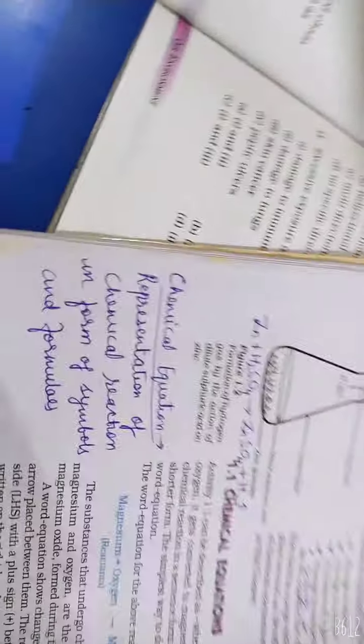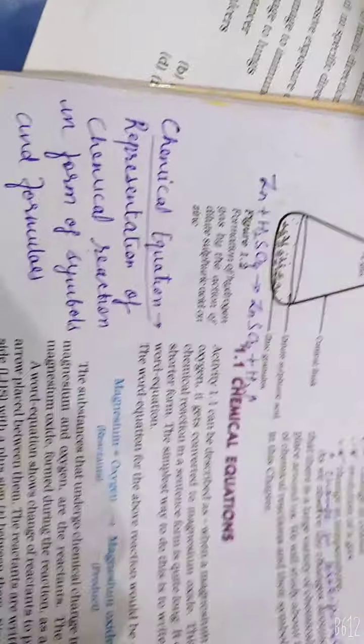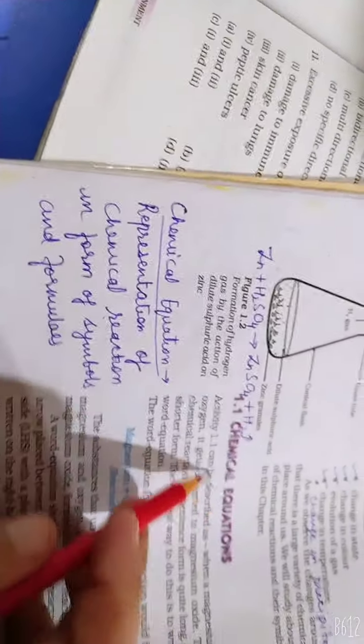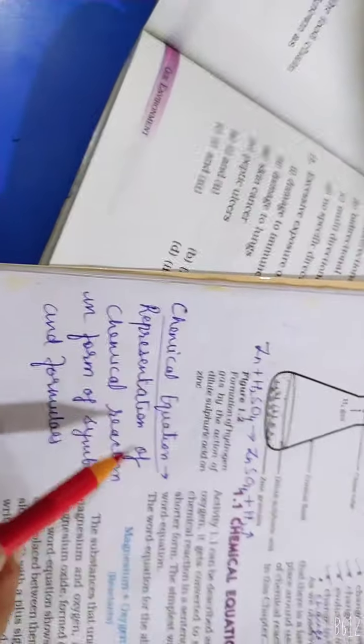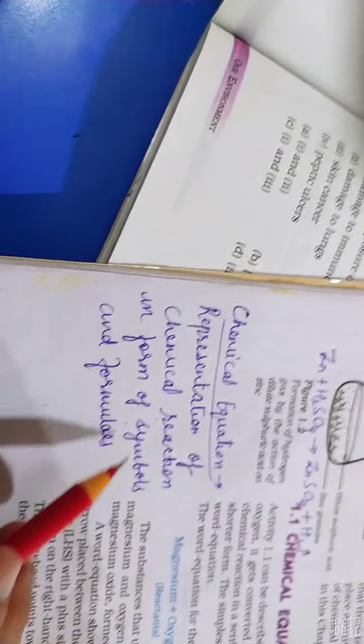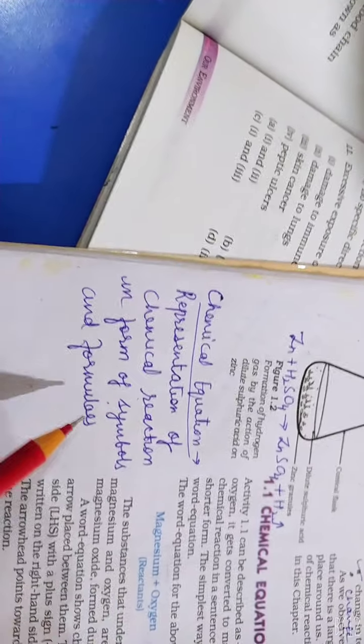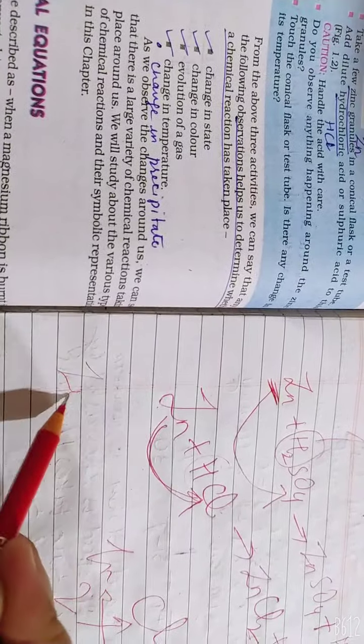After that, there is chemical equation. Now, what is the chemical reaction and equation? Equation is in symbolic representation. Representation of a chemical reaction in the form of symbols and formulas. Like I am writing Zn here. I am writing Zinc. I can also write Zinc in English.